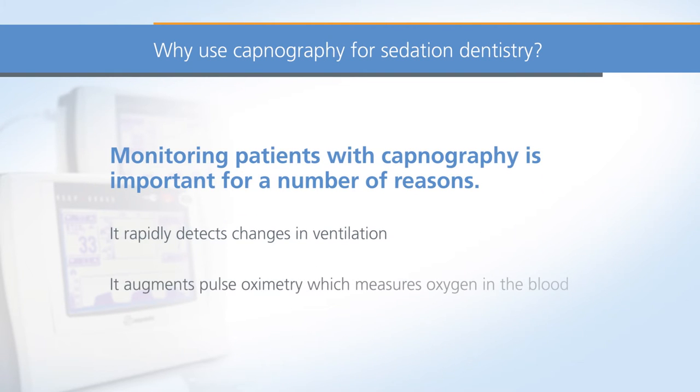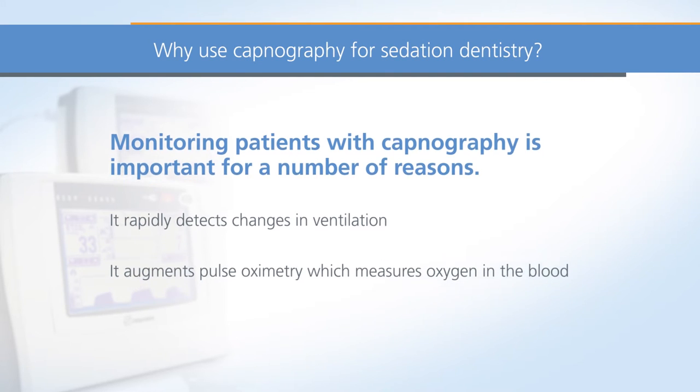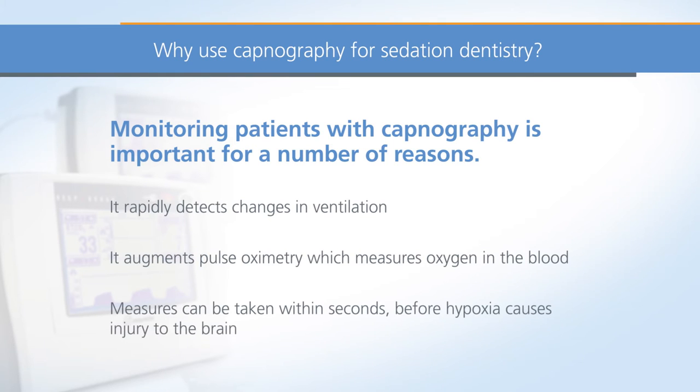It augments pulse oximetry readings, which reflect the patient's blood oxygen level and can be delayed by minutes. And lastly, remedial measures can be taken expeditiously within seconds before hypoxia can result in an irreversible injury to the brain.